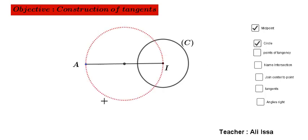Draw a circle of diameter A-I. Of course, the midpoint of the line segment A-I is the center of the new circle.